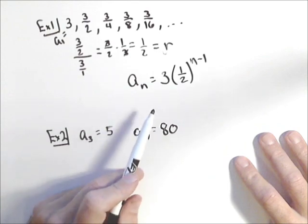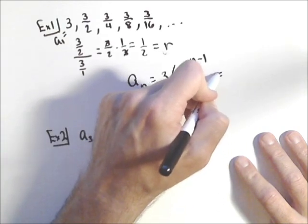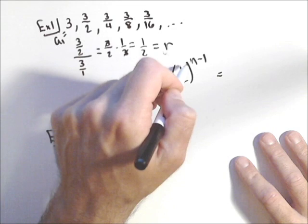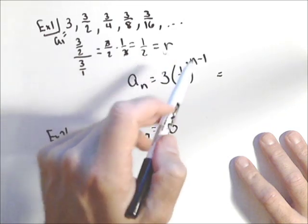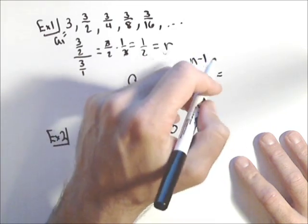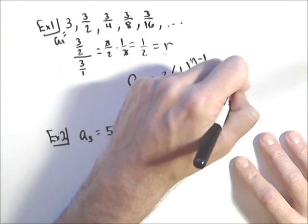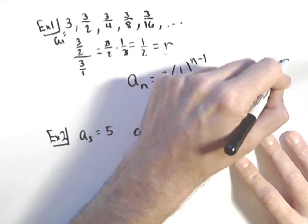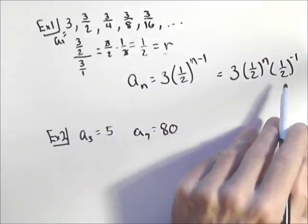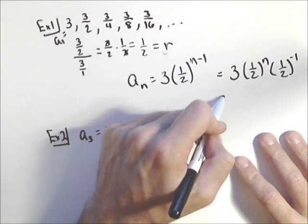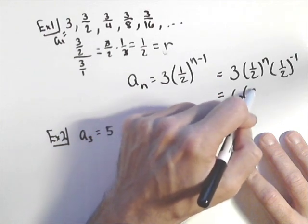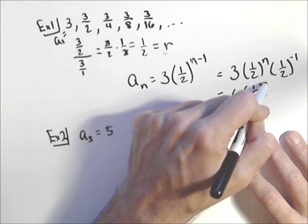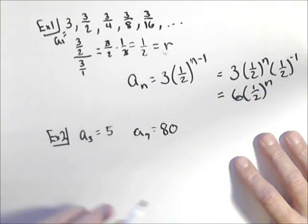So this would be one way of writing it. Or by properties of exponents, we could actually back this up one. It would be three times one half to the n, times one half to the negative one. One half to the negative one is two. So six times one half to the n is the other way you might see this one written.